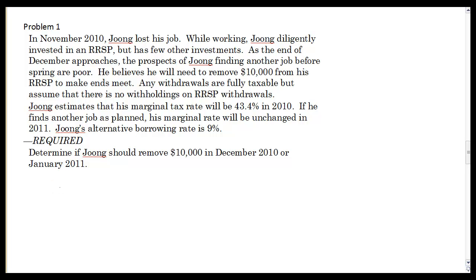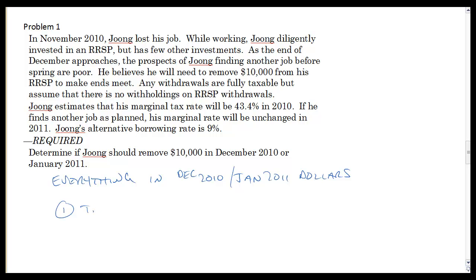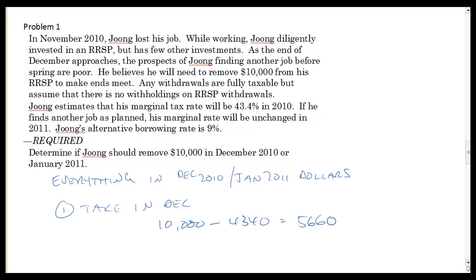For the first one, the key is we want everything in the same dollars. So what we're going to choose is to put them in December 2010, January 2011 dollars. You can put them in any dollars you want, but we've got to make sure we know exactly what point it is so that we're always comparing the same dollars to the same dollars. So if he takes option one and withdraws it in December, and we're ignoring any withholding the government imposes, then what he ends up with in pocket is $10,000 minus the tax on that $10,000, which is $43.40, and he's left with $56.60.